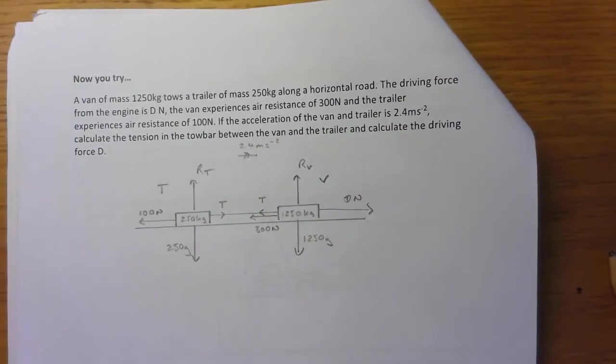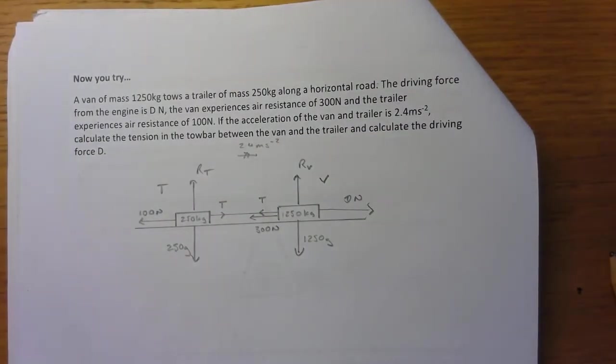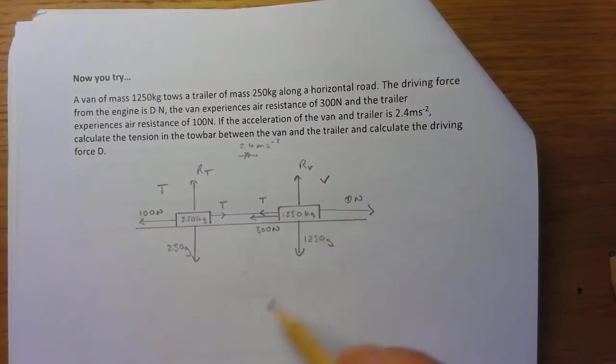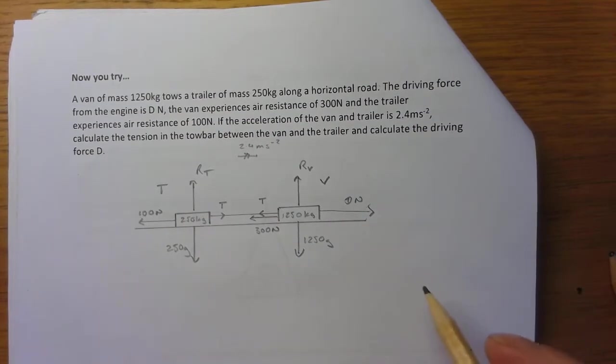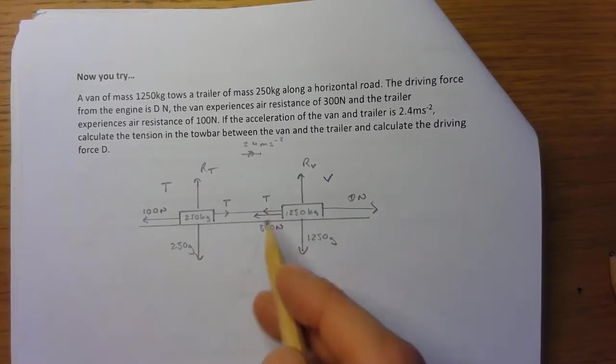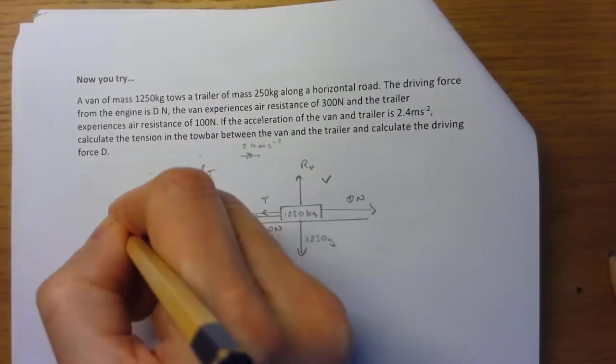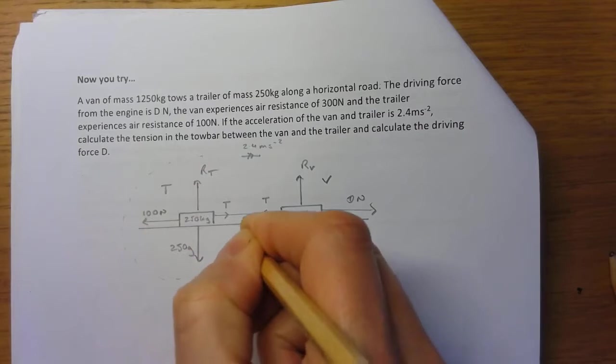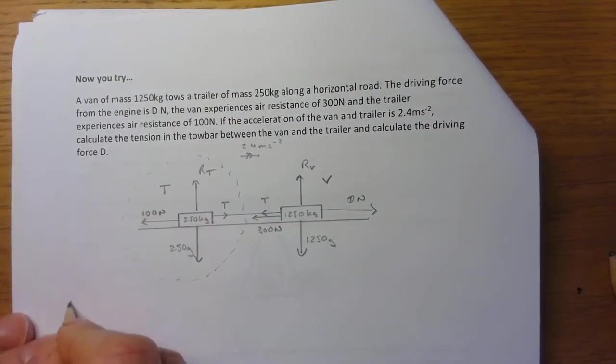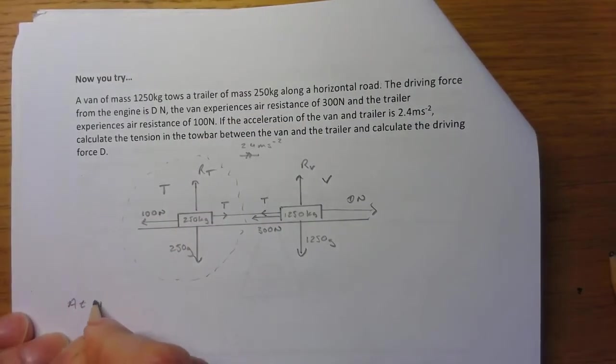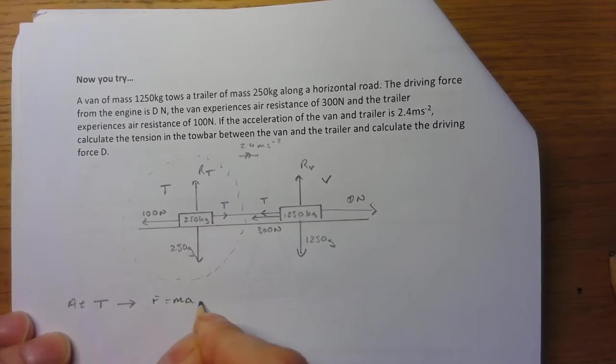I know the acceleration is 2.4 meters per second squared in that direction. I'm being asked to find the tension and the driving force. I've got a couple of options here. I suppose I take the whole system and then that would give me forces without tension. I think what I'm going to do is I'm going to resolve at T. I'm going to take this part of it here. I'm going to resolve to the right and I'm going to do Newton's second law.